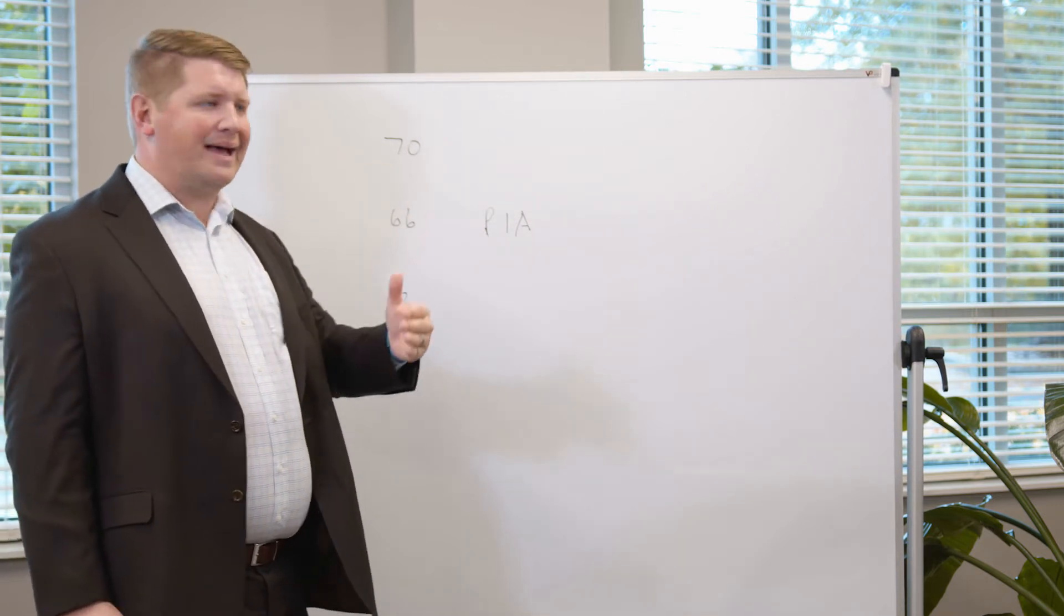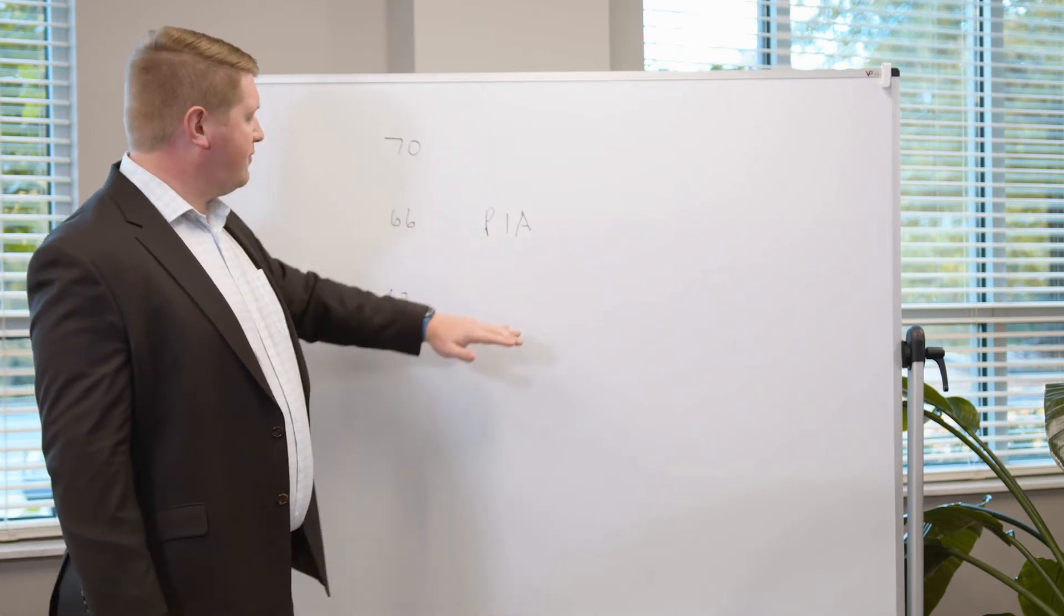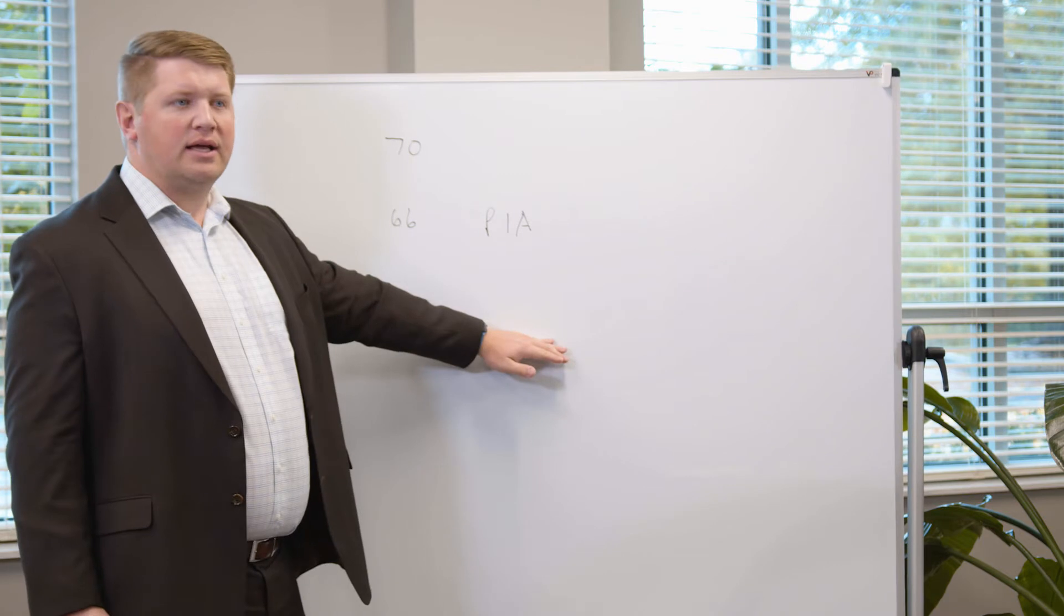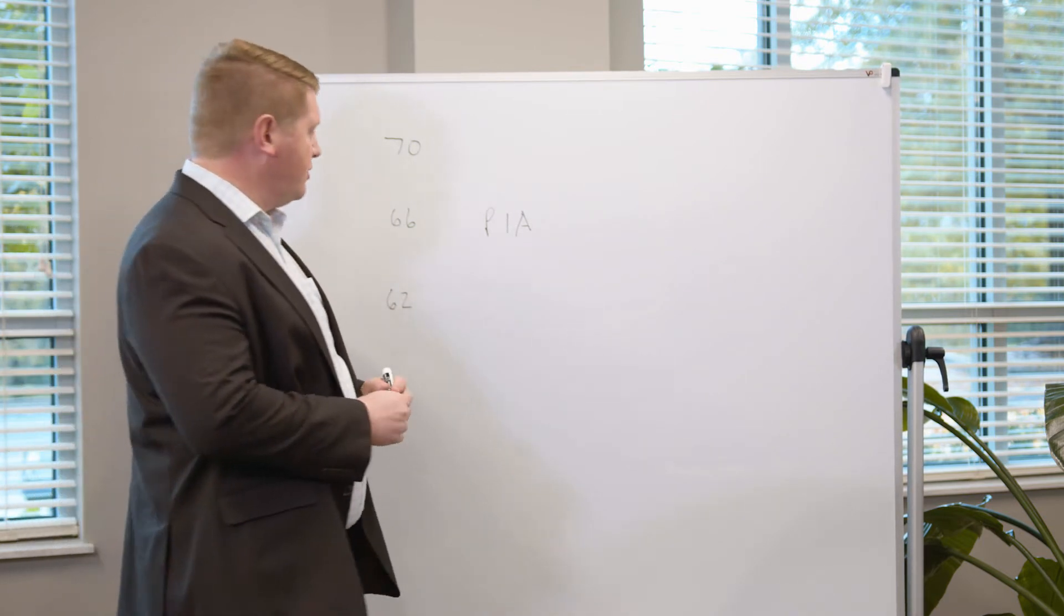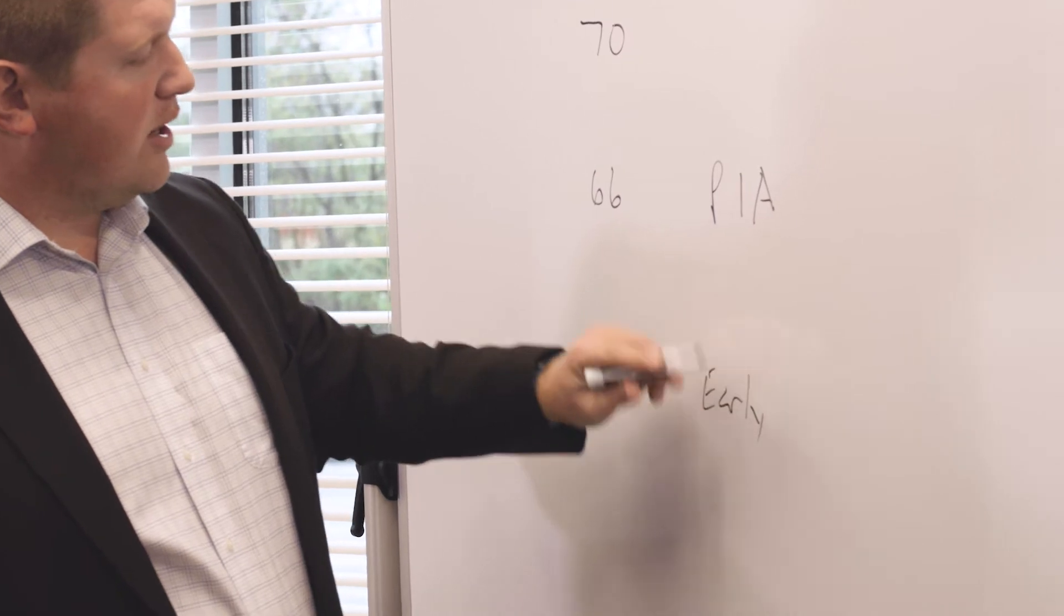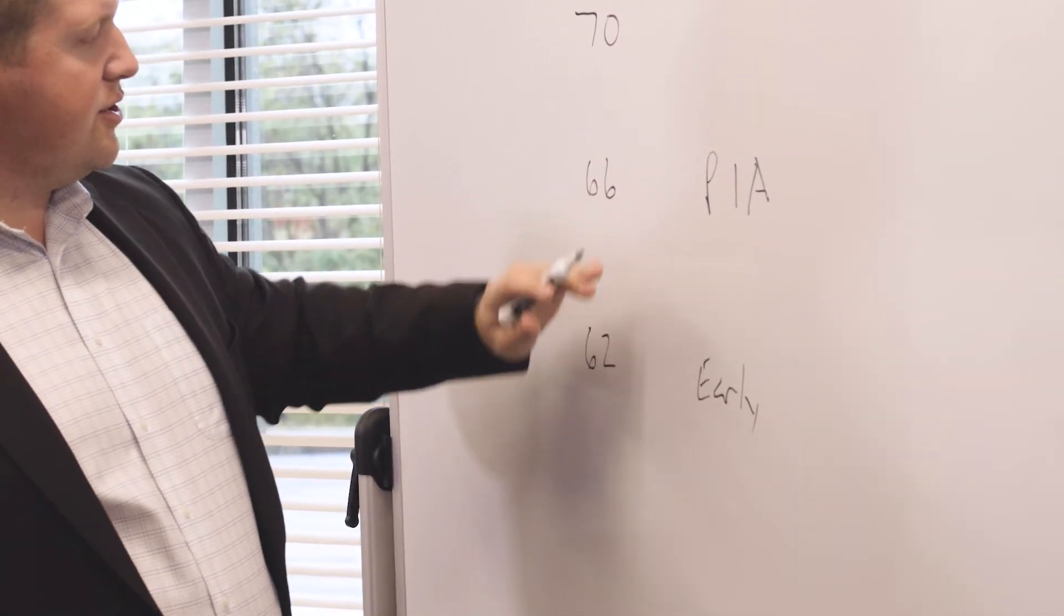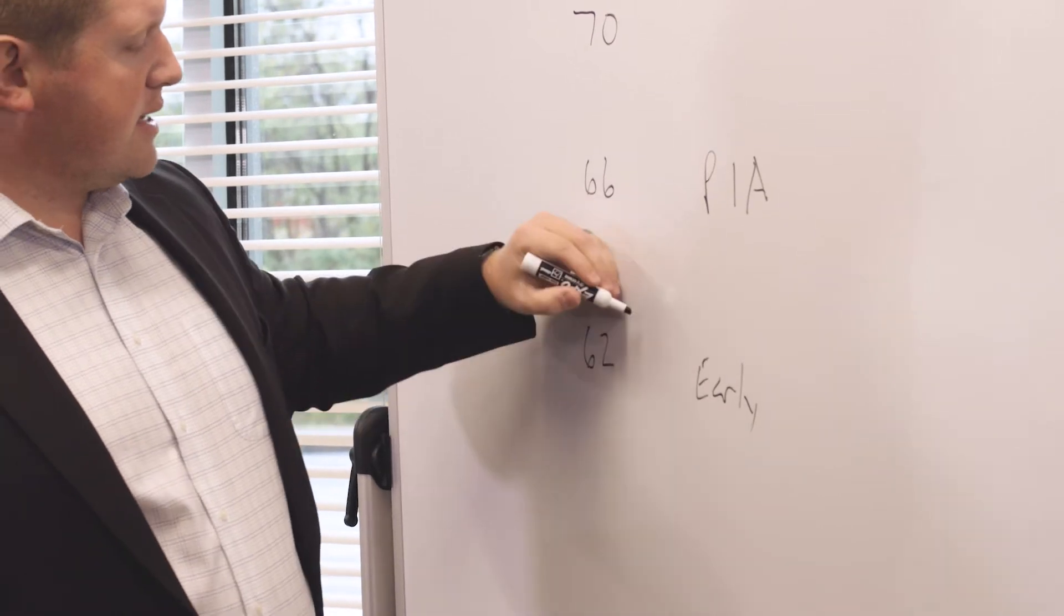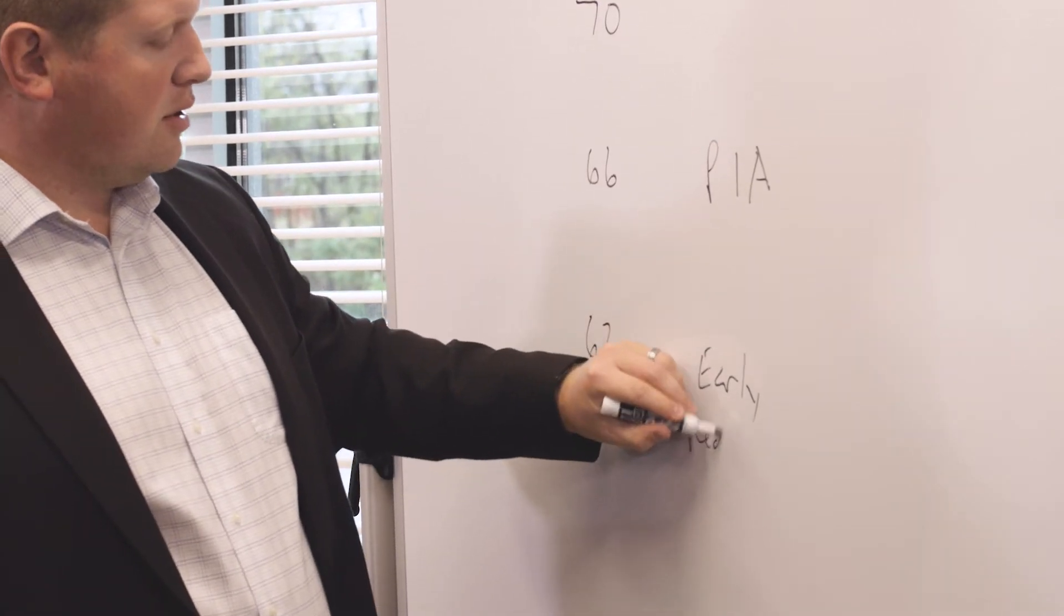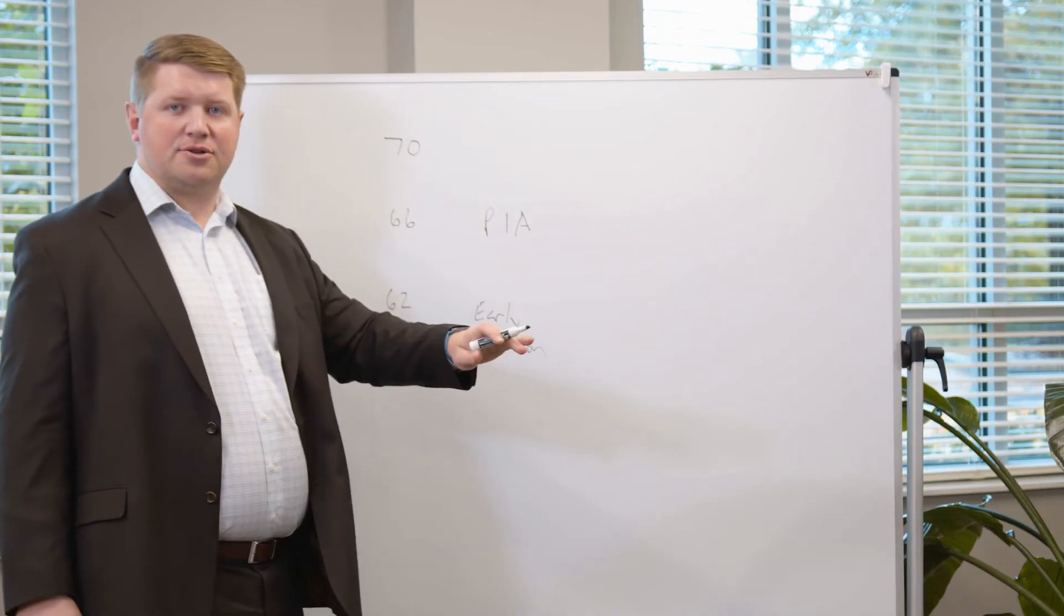Everything is linked to this age 66. If we decide to file early at 62, you are filing early in the way they view PIA. Everything from 62 to 66 represents a reduction in the benefit you'd have at your full retirement age.